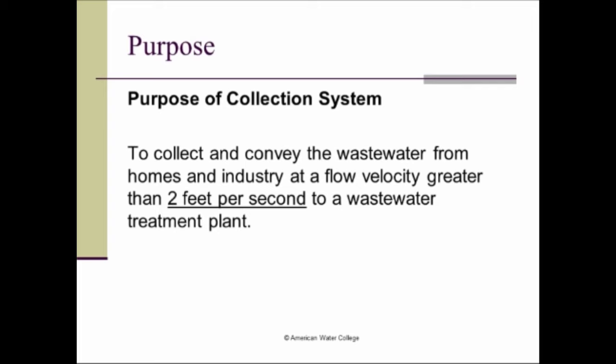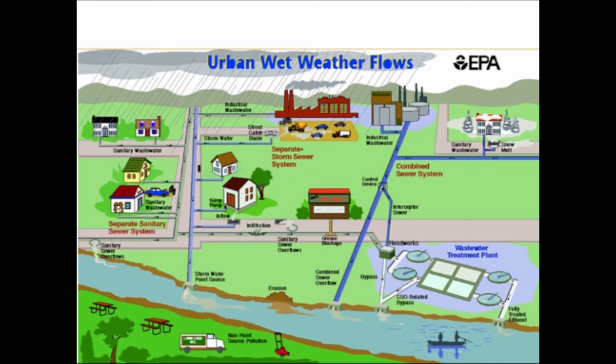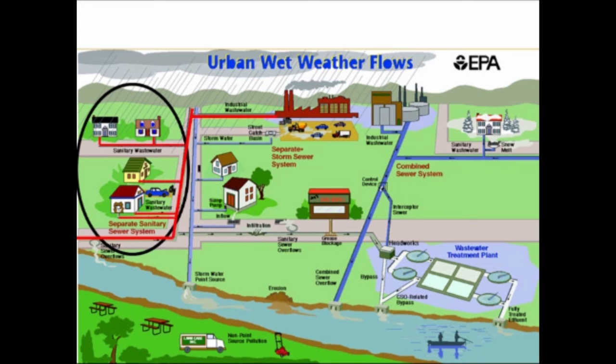The purpose of a collection system is to collect and convey the wastewater from homes and industry at a flow rate greater than two feet per second to a wastewater treatment plant. The system is designed so that flow is at least two feet per second, collecting water from both residences and commercial and industrial customers. Industry and residences combine to provide all the flow that goes to the headworks of the wastewater treatment plant.